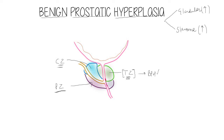The transition zone is very important because benign prostatic hyperplasia arises in this zone. The peripheral zone and the central zone are both spared from benign prostatic hyperplasia.